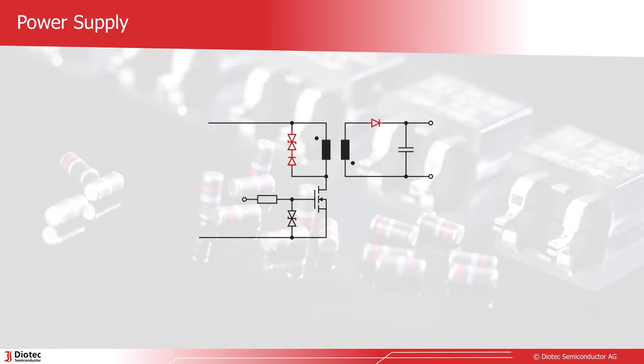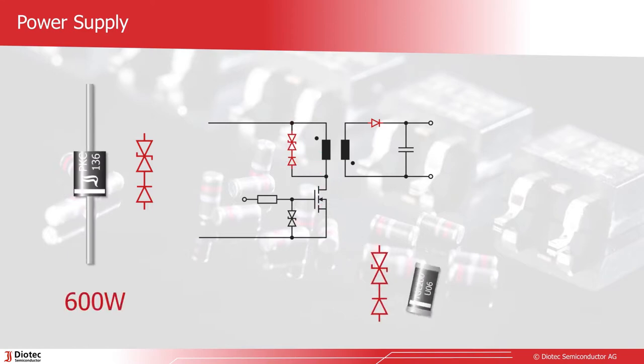For the snubber network, Diotec offers powerful 2-in-1 solutions. For example, the PKC136 in axial lead or the TGL200U06 in SMD.